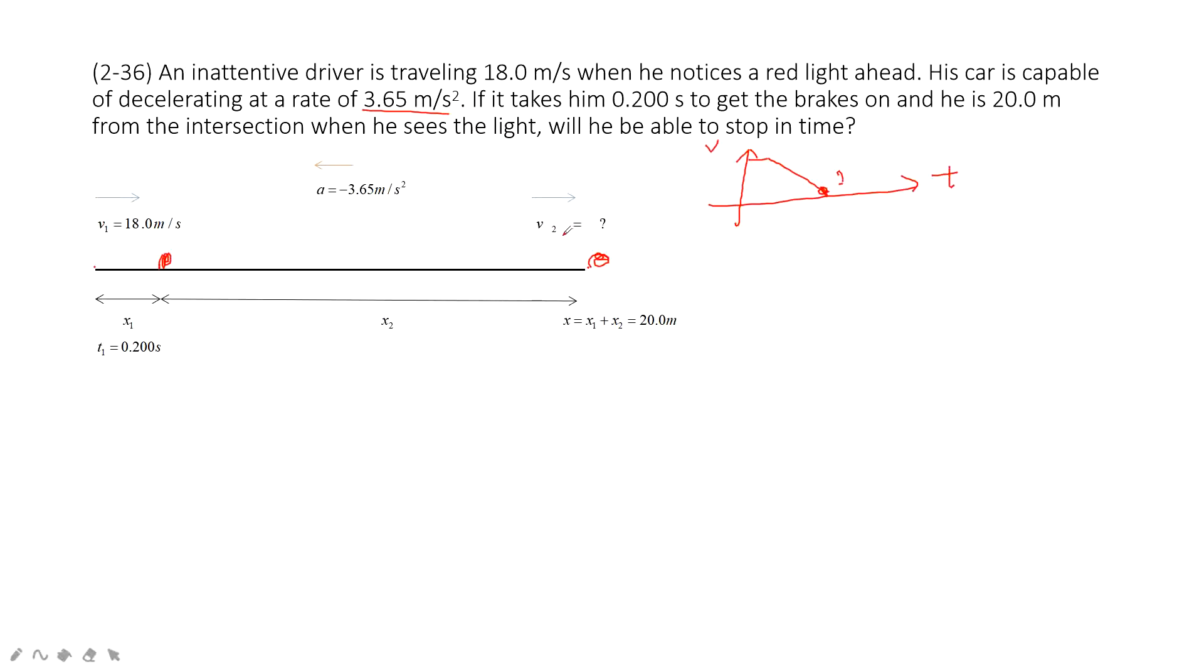We can list all the known quantities there. We need to pay attention to the acceleration. We must keep this negative sign because it is slowing down and stopping, so acceleration is in the negative direction. In this one, we know we need to find v2.